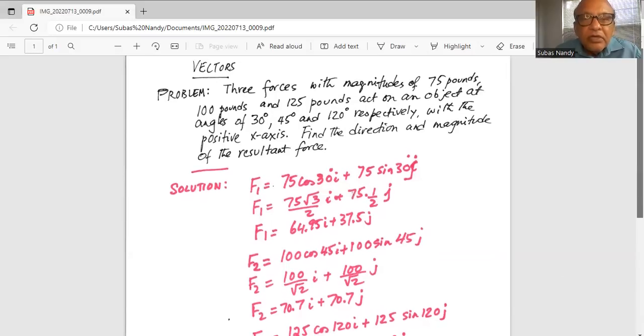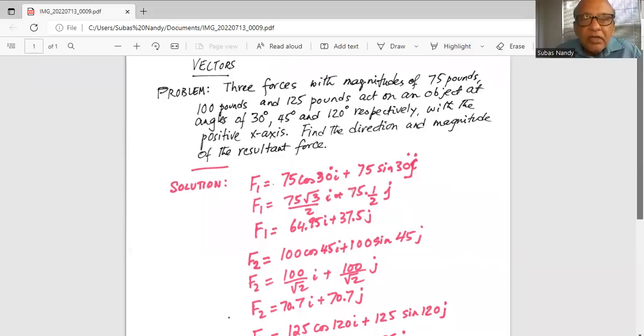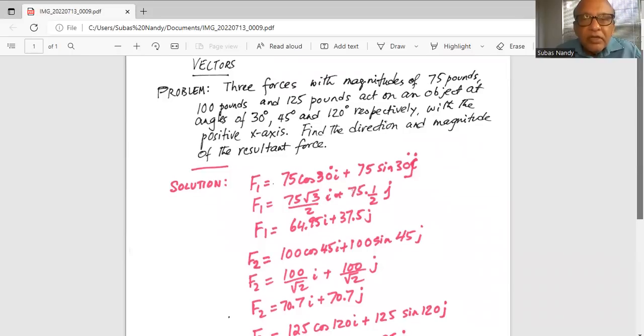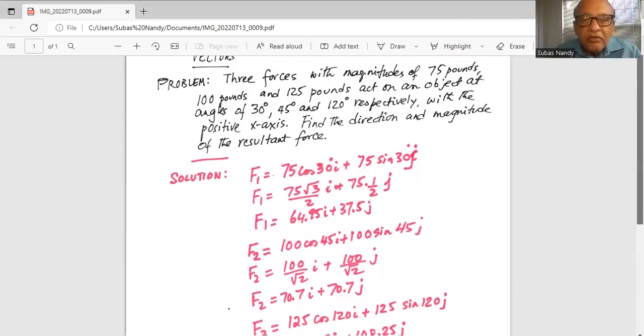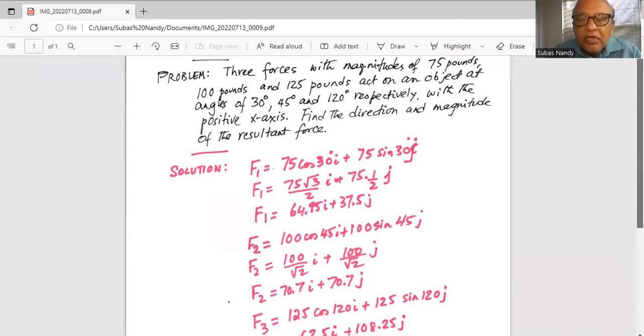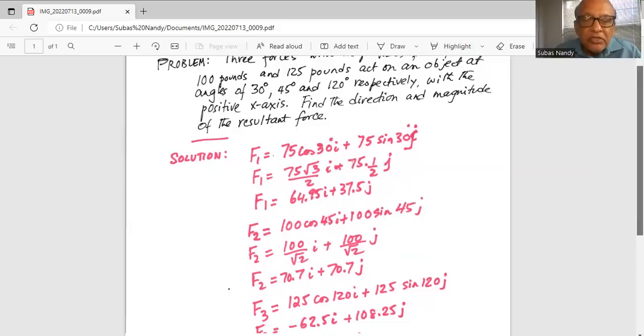Next, F2. Magnitude is 100 and it makes an angle of 45 degree with the positive x-axis. So it's 100 cosine 45 plus 100 sine 45. We know the value of cosine 45 and sine 45 are same and it's 1 over square root of 2. So F2 is equal to 100 divided by square root of 2 times i plus 100 divided by square root of 2j or 70.7i plus 70.7j.